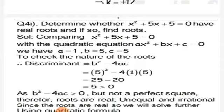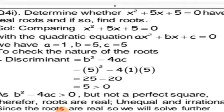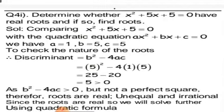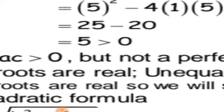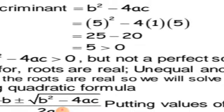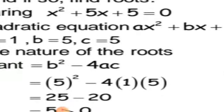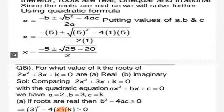Question four: determine whether x² plus 5x plus 5 equals zero has real roots, and if so find the roots. First compare to find a, b, and c. Then find the discriminant: b² minus 4ac. The discriminant is greater than zero, so the roots are real. However, it is not a perfect square, so the roots are real but irrational. We then use the quadratic formula to solve for x.